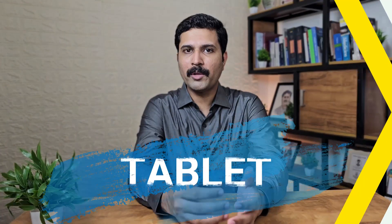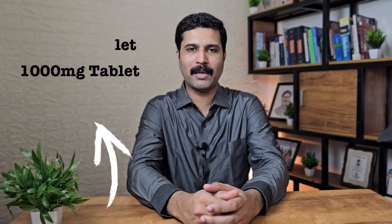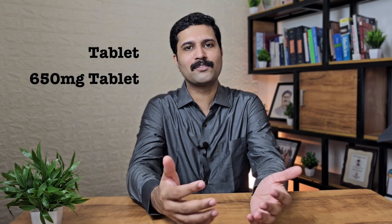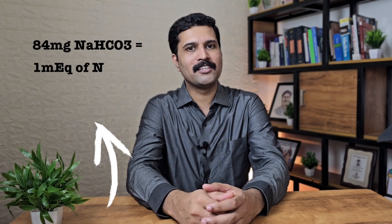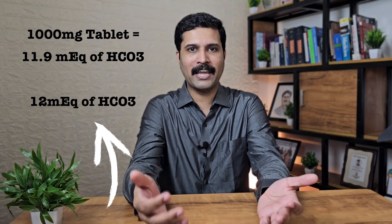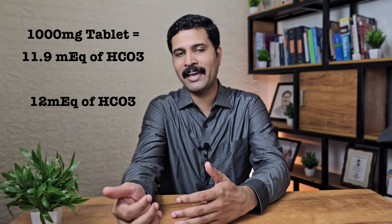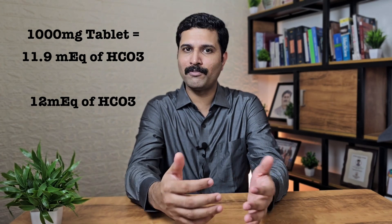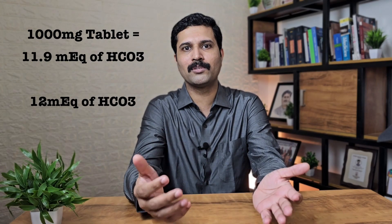Sodium bicarbonate tablets are available as 500 mg and 1000 mg tablets; in some countries they are available as 325 mg and 650 mg. Since 84 mg of sodium bicarbonate equals 1 milliequivalent of sodium and 1 milliequivalent of bicarbonate, a 1000 mg tablet contains approximately 11.9 milliequivalents — roughly 12 milliequivalents — of bicarbonate.